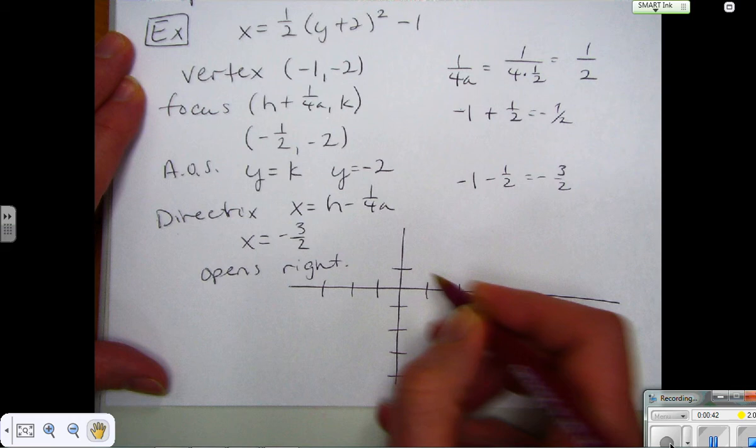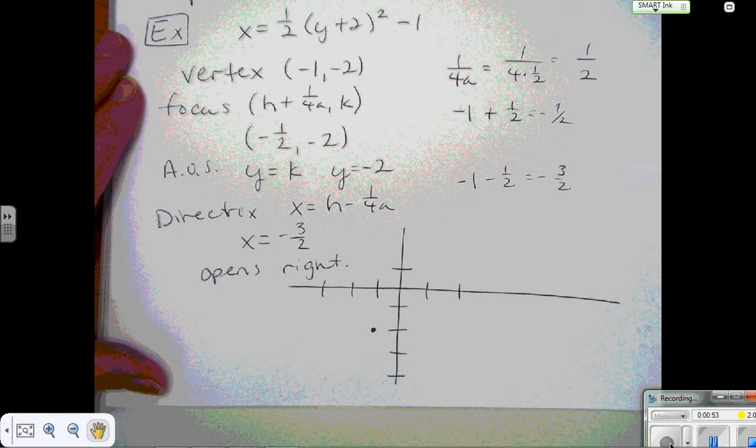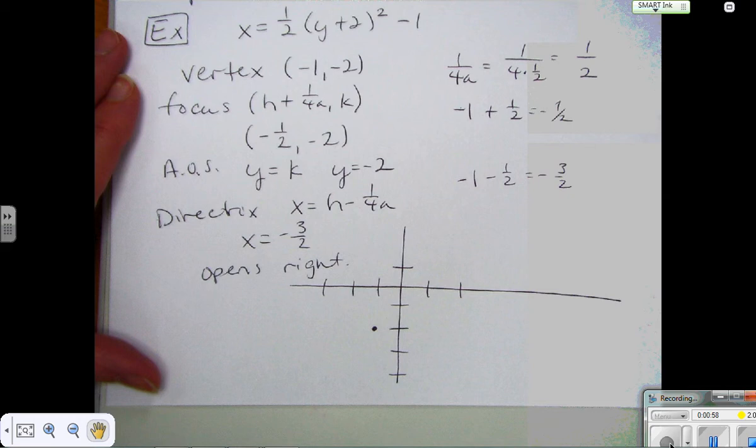So the vertex is at negative 1, negative 2. There's my vertex. And I'm just going to draw all the stuff there that I have. On your assignment, just read the directions and follow the directions. So if it doesn't tell you to graph everything, you don't need to worry about it. Just graph the parabola, graph what they're telling you.